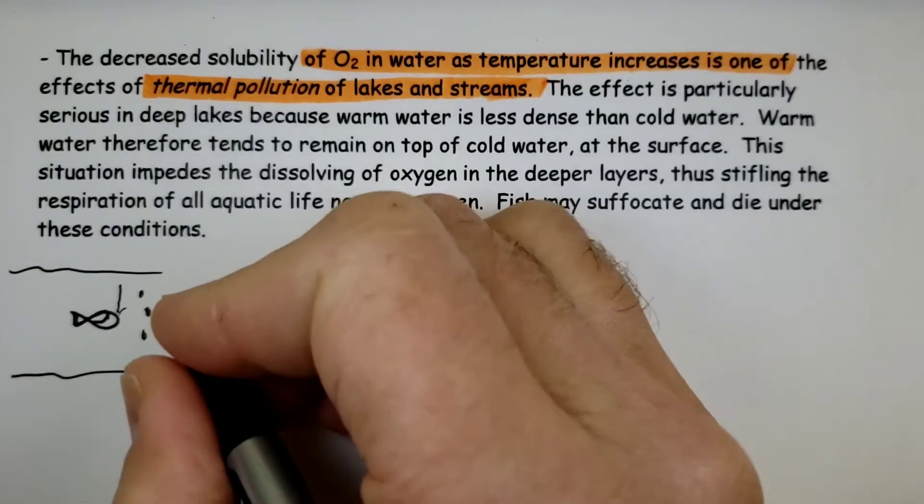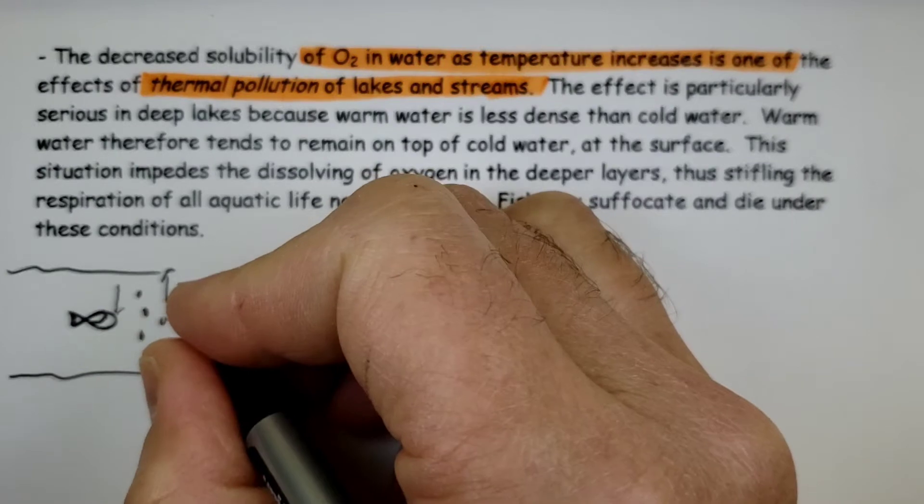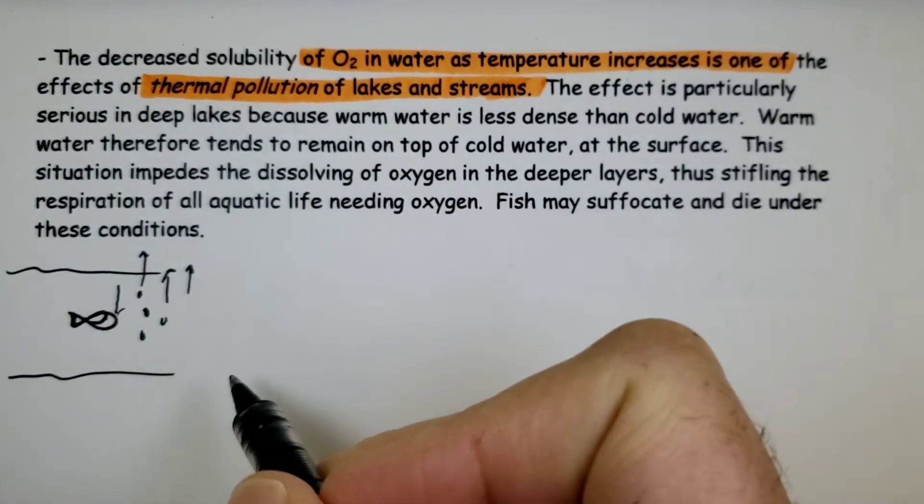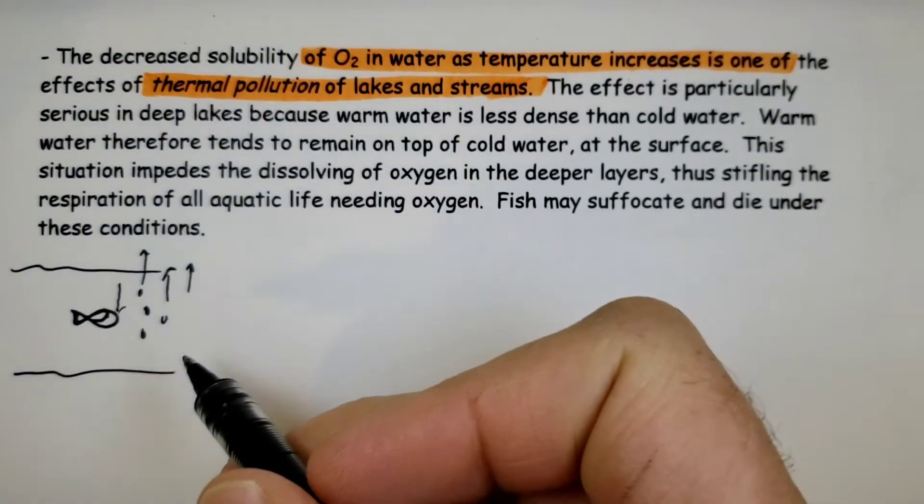And of course, if the lake increases in temperature, these gas particles will be driven off the water, leaving less dissolved in there. And of course, fish have difficulty breathing if there's less oxygen in there.